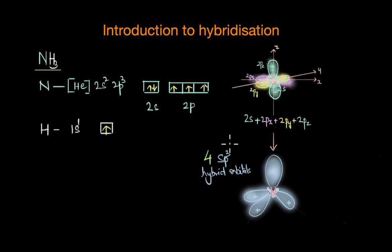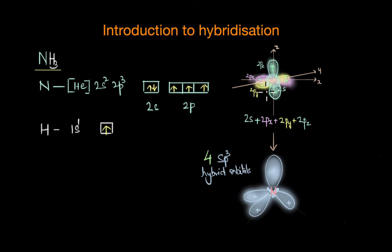It's straightforward: 1 2s orbital combines with 3 2p orbitals and we end up with 4 sp3 hybrid orbitals. We started with 2s and 2p orbitals that have different shapes and different energies, but after hybridization we end up with 4 identical equivalent sp3 hybrid orbitals that have the same energy and shape.